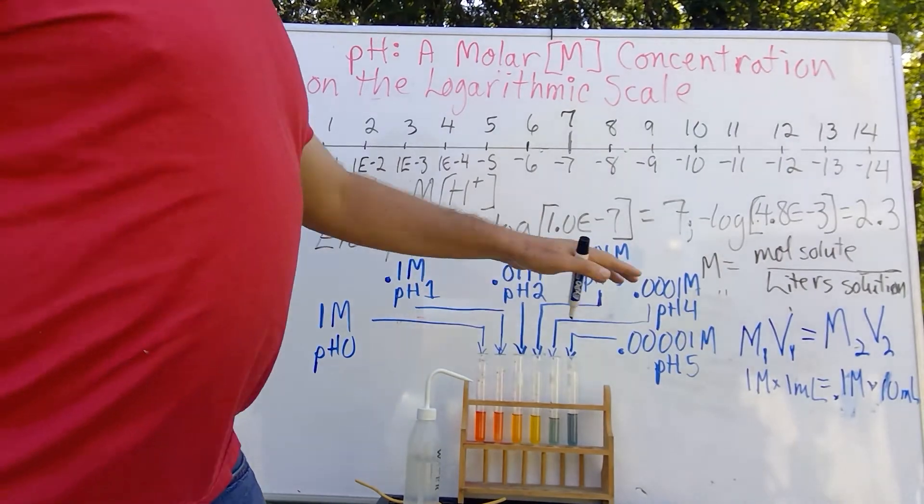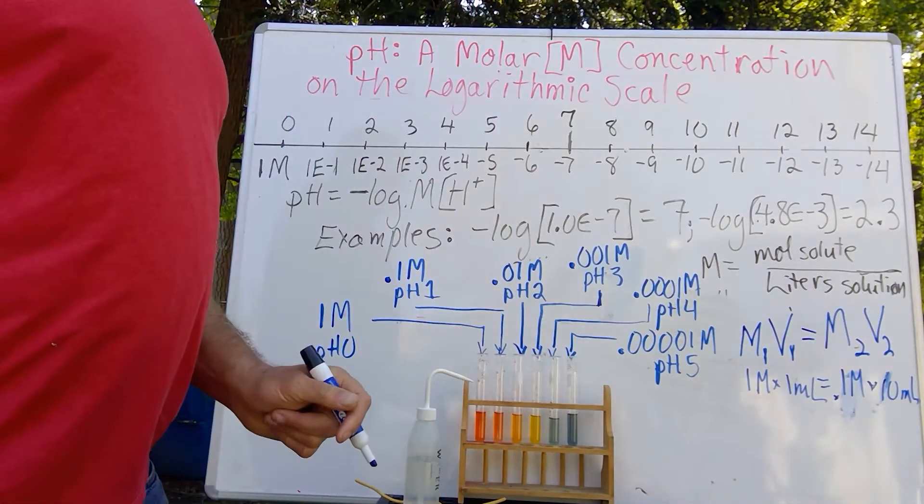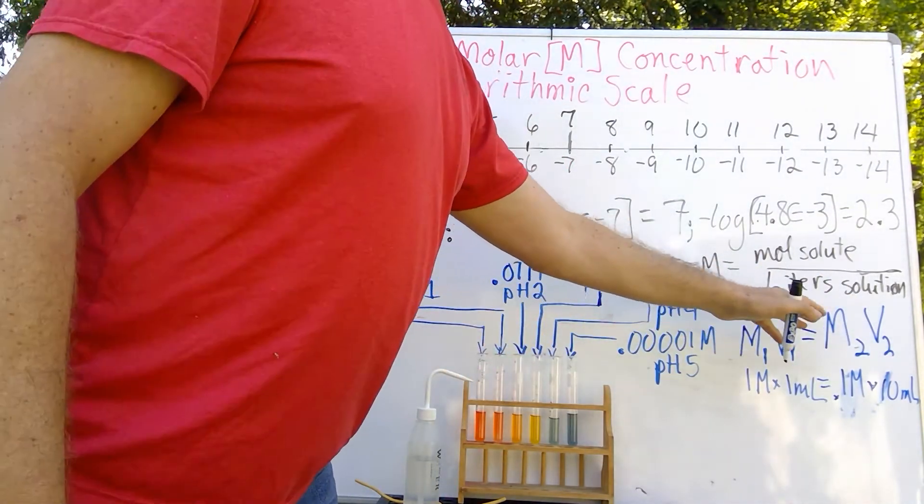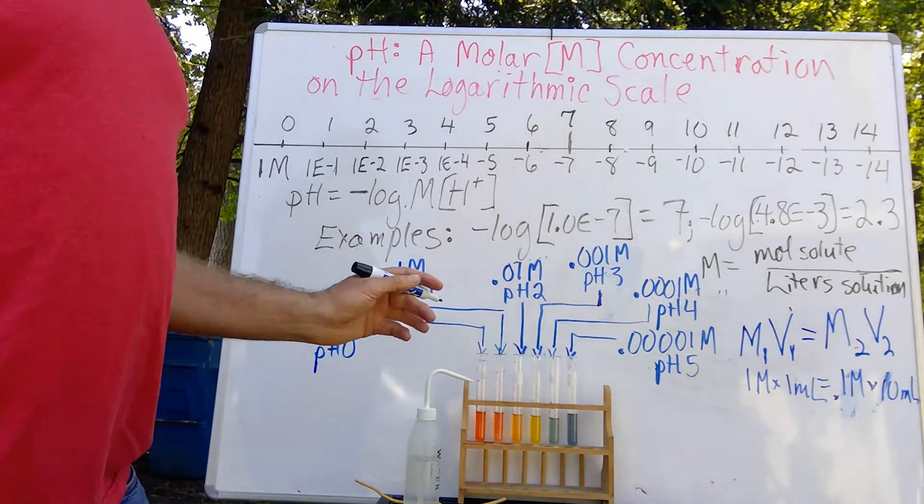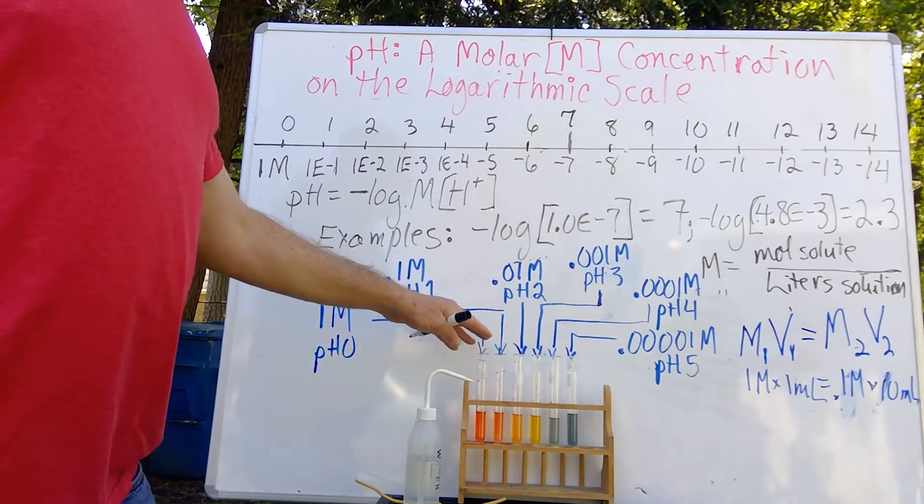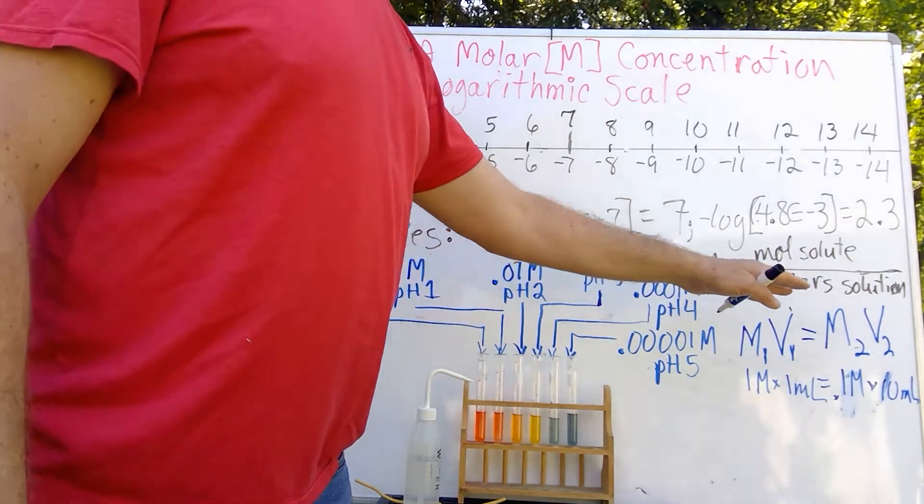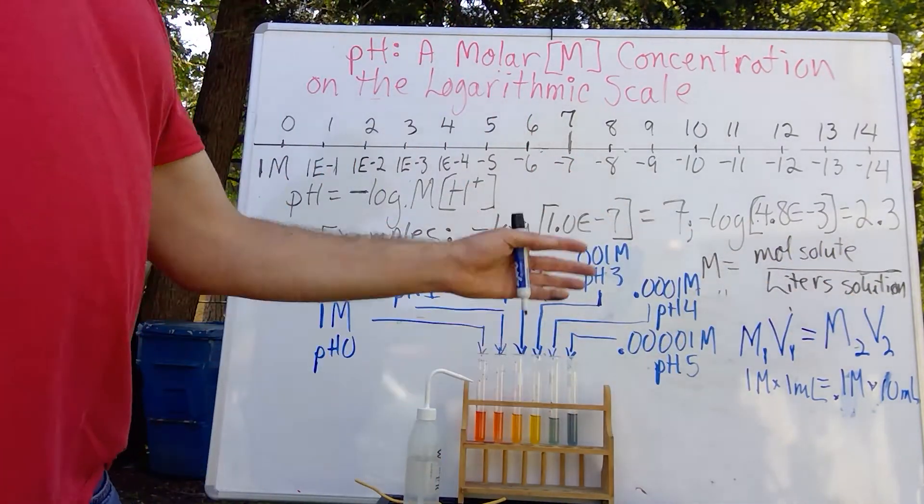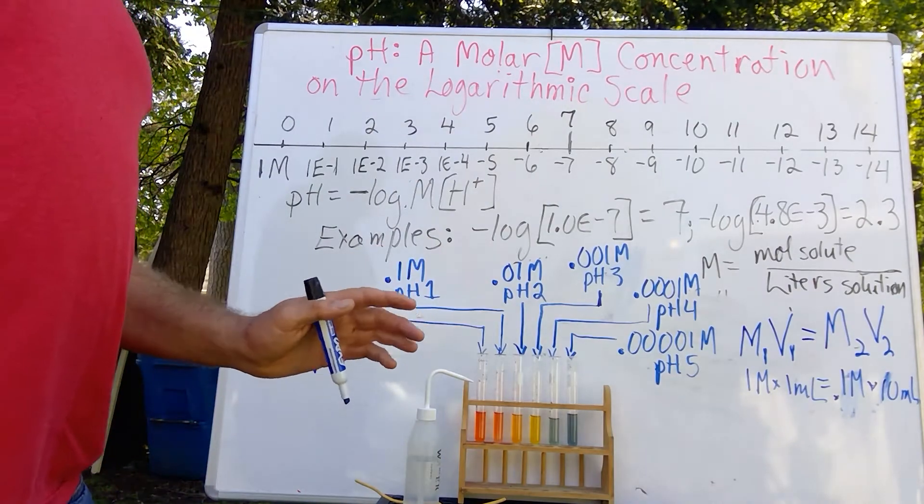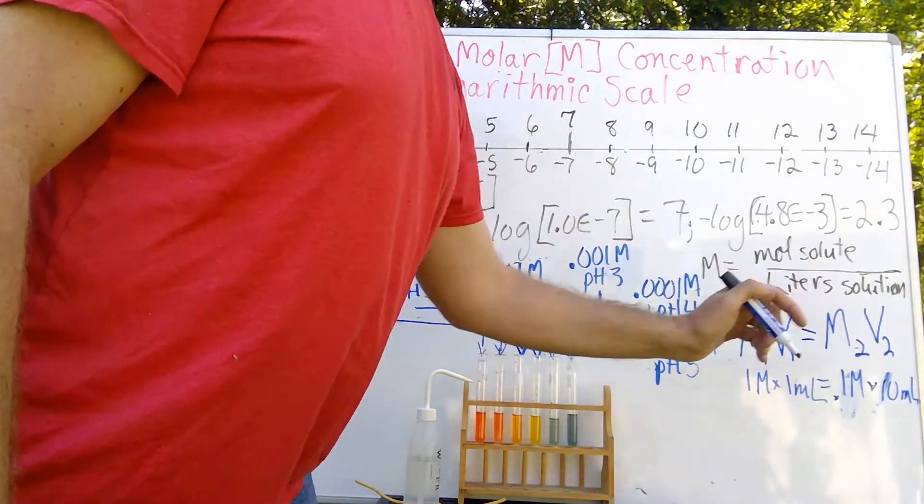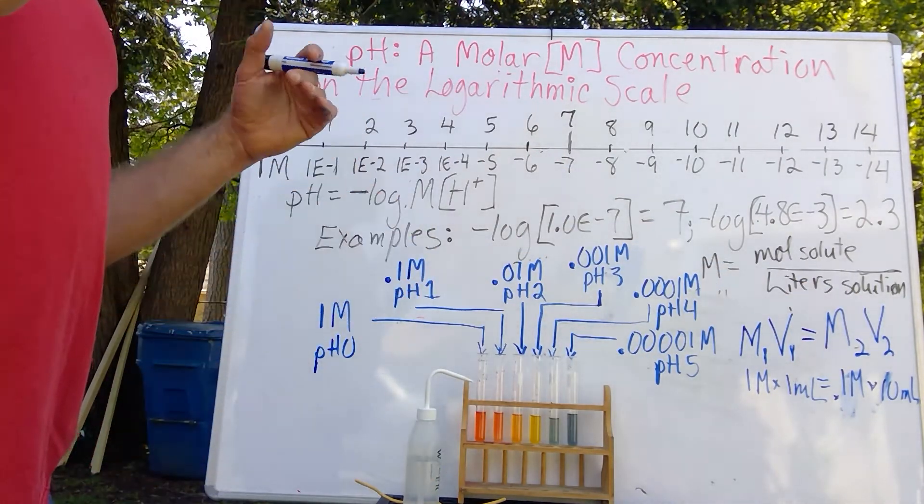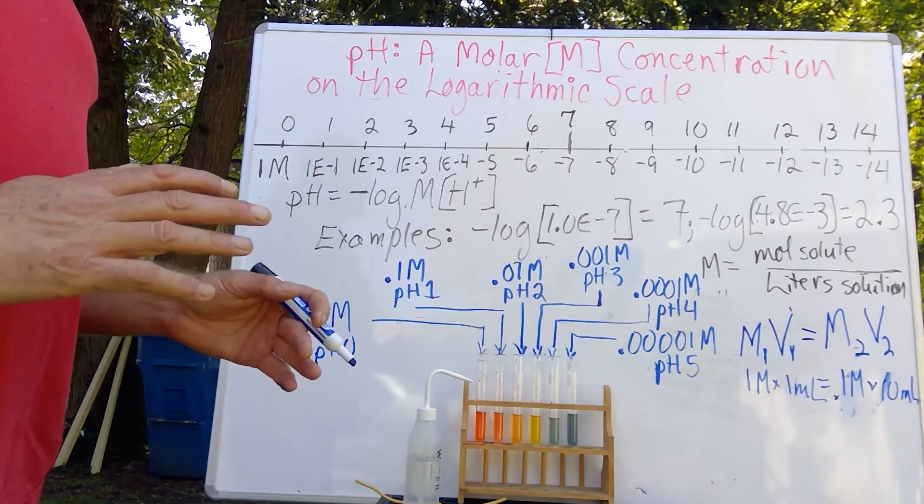So, this is what is called a dilution formula. There's a lot of other names for it. But what this does is this helps you take a certain volume from a certain strength to help make a certain volume of another strength. And so this is a very useful equation when we're doing basic lab chemistry.